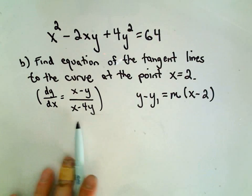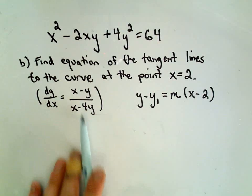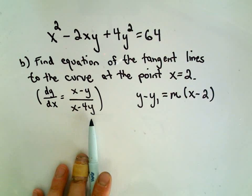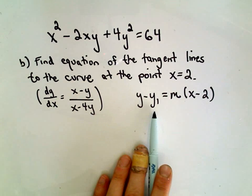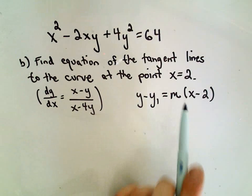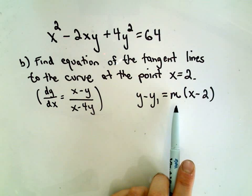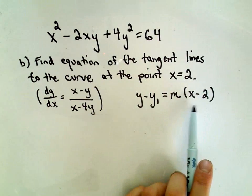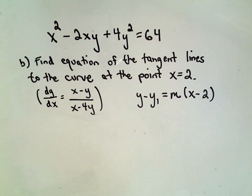So recall from part A, we found that the derivative dy/dx, the formula for that was x minus y over x minus 4y. And we know an equation of a line is simply y minus the y coordinate equals m, which is going to be the slope of the tangent line at this point, and then x minus the x coordinate, which we're given as 2.